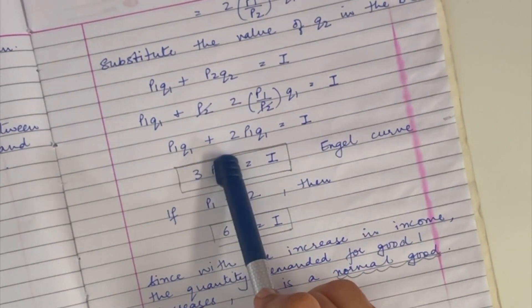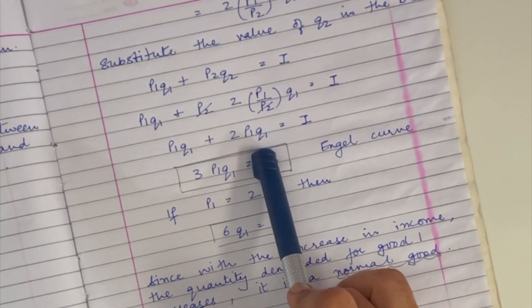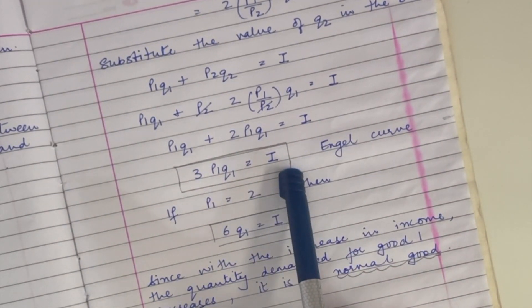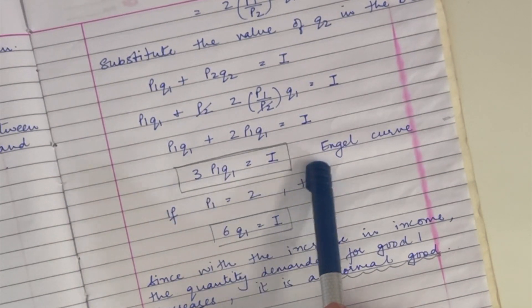So I get p1 q1 plus 2 p1 q1 equals I. I get 3 p1 q1 equals I. Now this is my Engel curve.